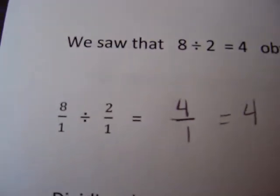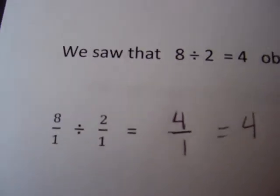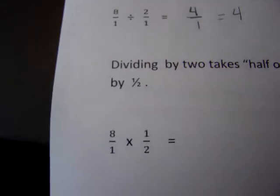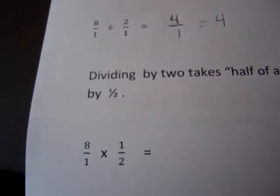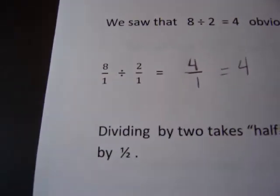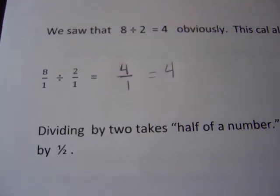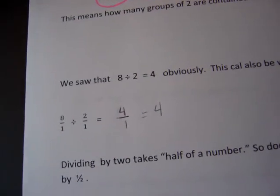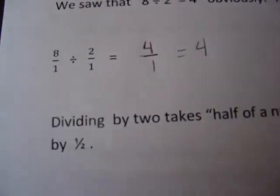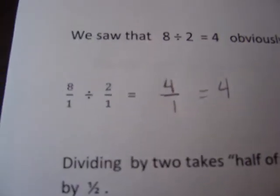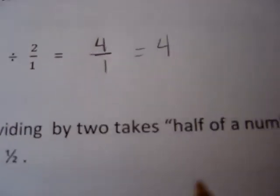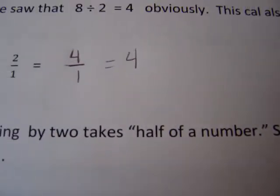I want to talk a little bit about the relationship between multiplying and dividing. They're opposite processes. What we just did is we divided 8 by 2. Dividing by 2 takes half of a number, right?